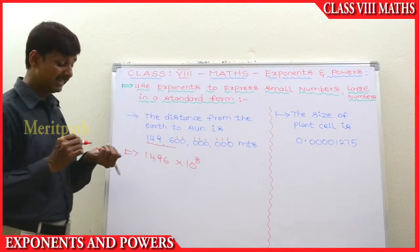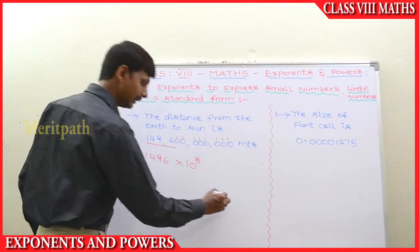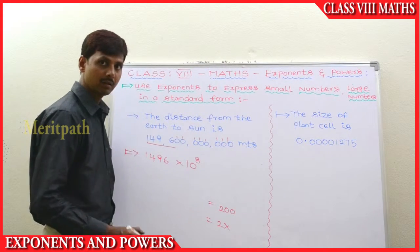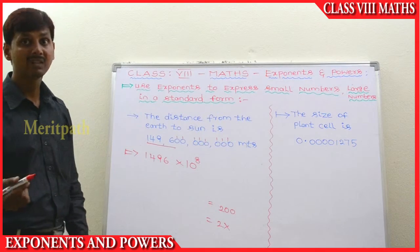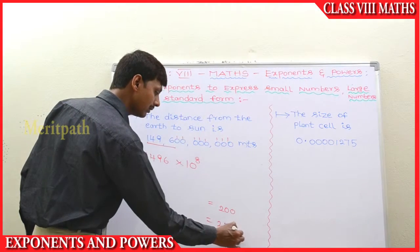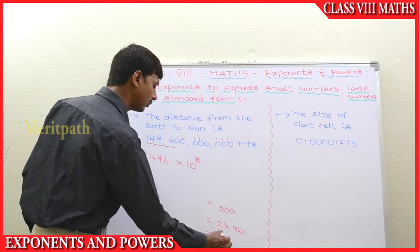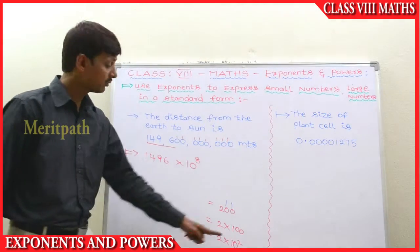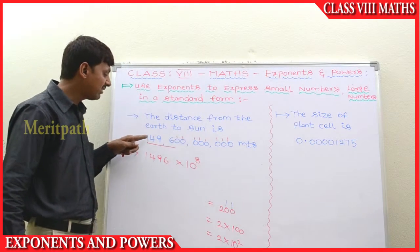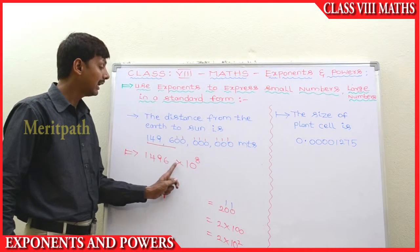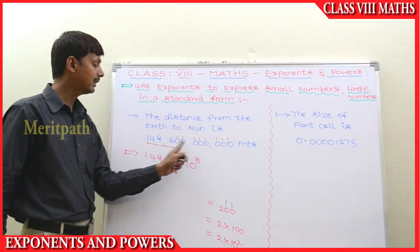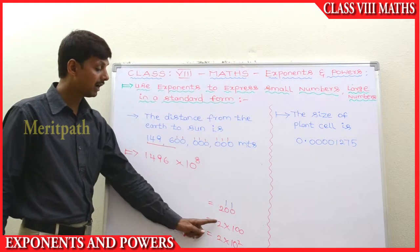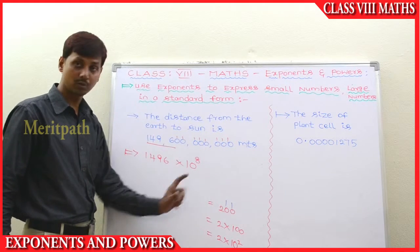What we have done is: suppose there is 200, for example. We expand the form. 200 can be written as 2 into 100, which is 2 into 10 to the power 2, because there are 2 zeros present. Similarly, we have taken 1496. Then 1496 into 10 to the power 8, because we counted 8 zeros. Using this expanded form approach, 1496 into 10 to the power 8.